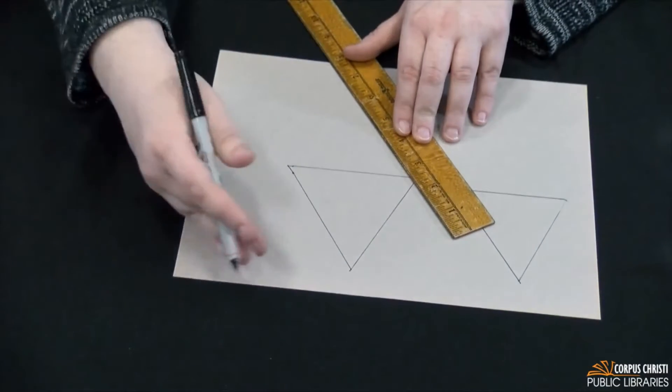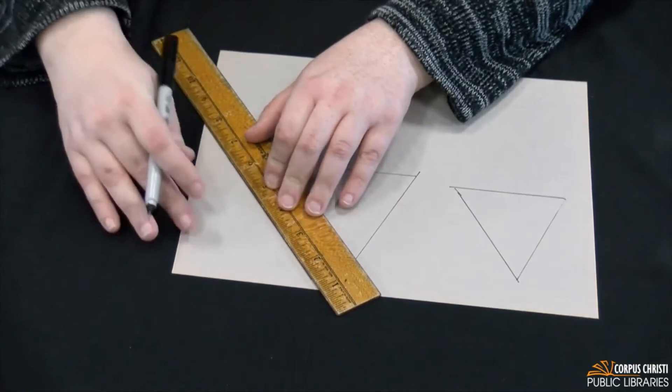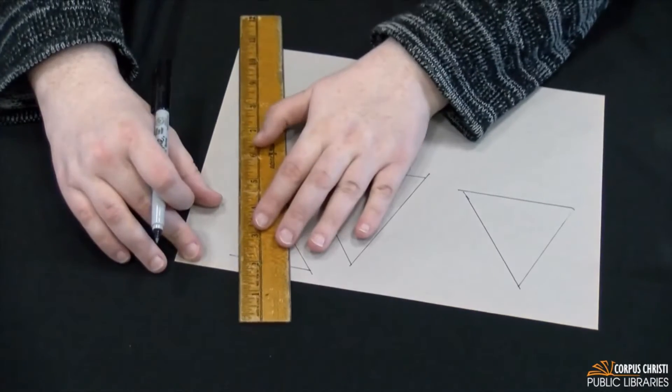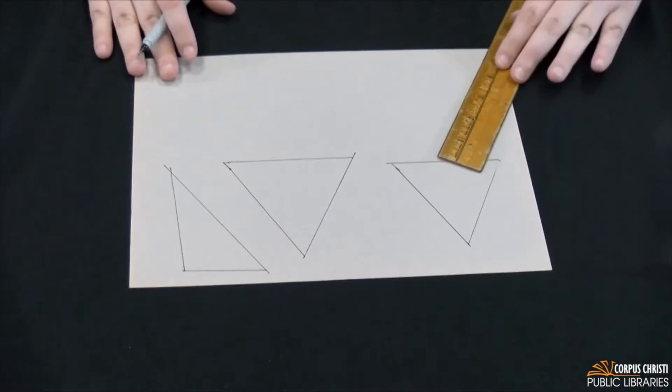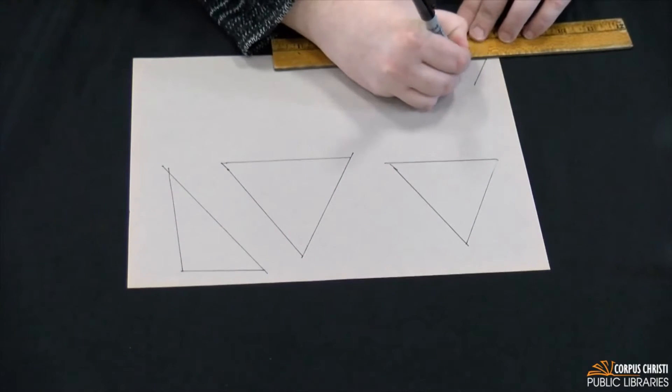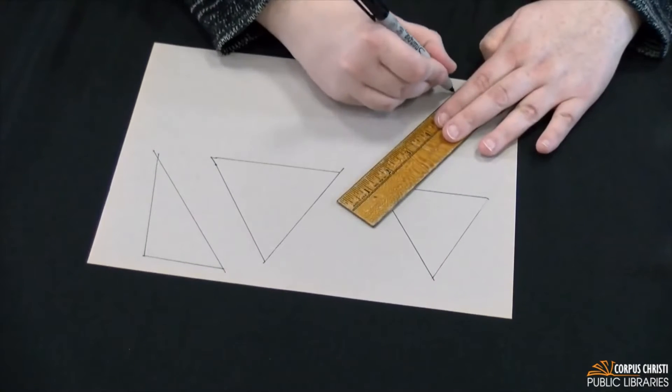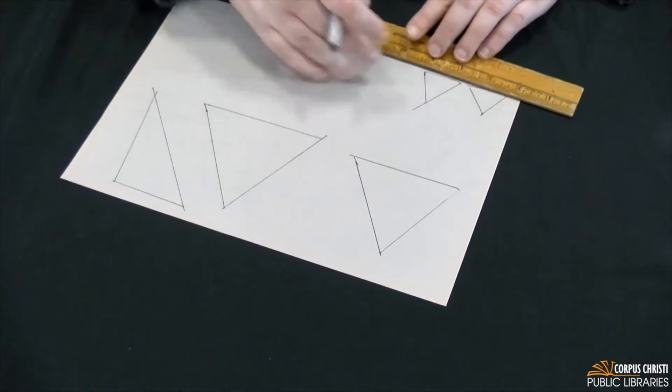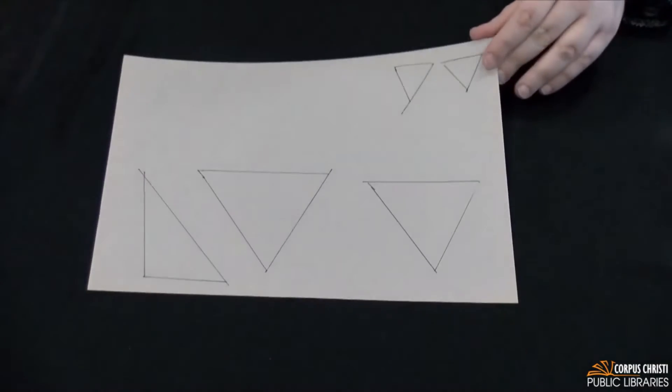Over here on this corner I have a slant. I'm going to make my long triangle that's going to be my tail. And two small triangles for my ears. So this is what I have right now. I'm going to go ahead and cut those out.